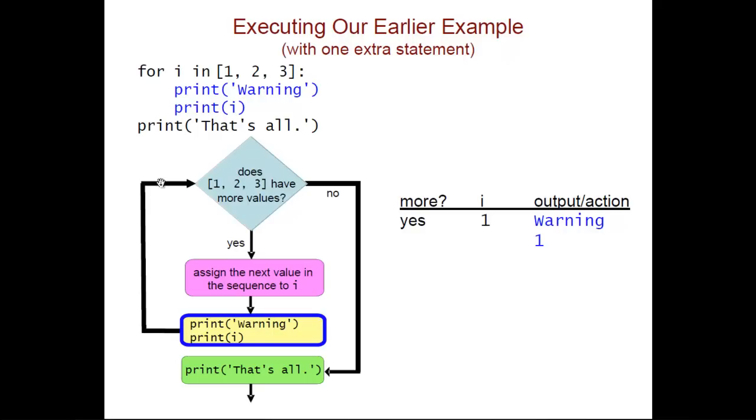We then loop back to the top of the statement and say, are there any more values in the sequence? And there are, so we assign the next value, which is 2, to the loop variable i, so I'm putting that in my table. We then execute the body for that value of i, and so we get warning 2.